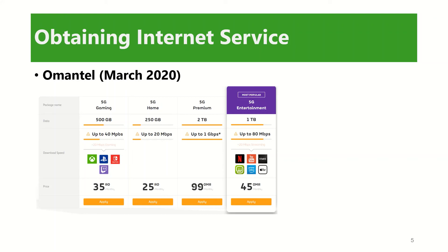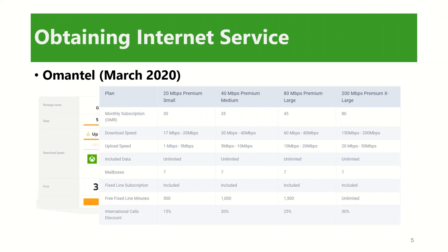If you think 5G technology is too much or too expensive, OmanTel also offers fiber optic connections. The monthly subscription ranges from 30 rials up to 80 rials, with speeds from 20 Mbps up to 200 Mbps. You have to decide how much your budget is if you would like to go with OmanTel.